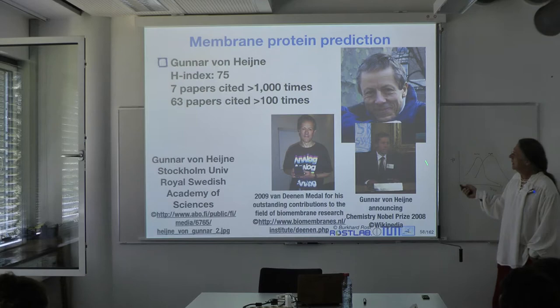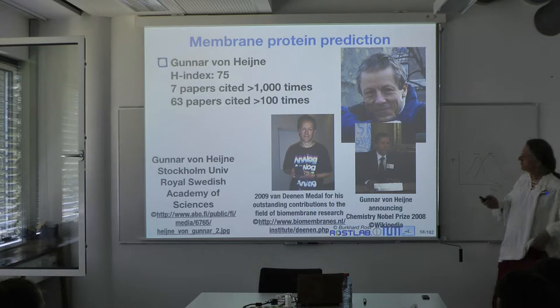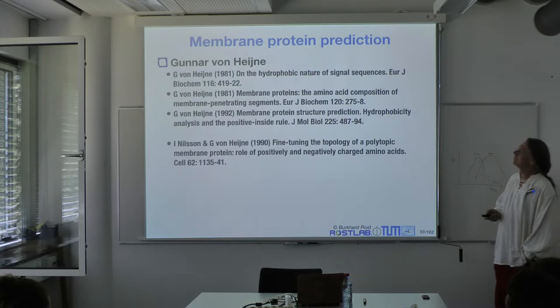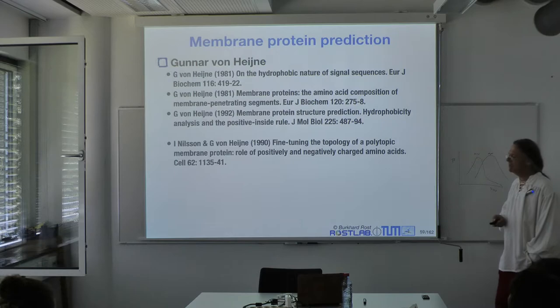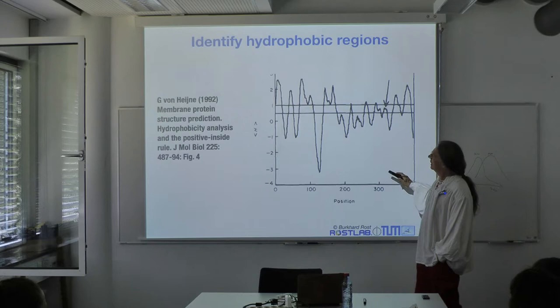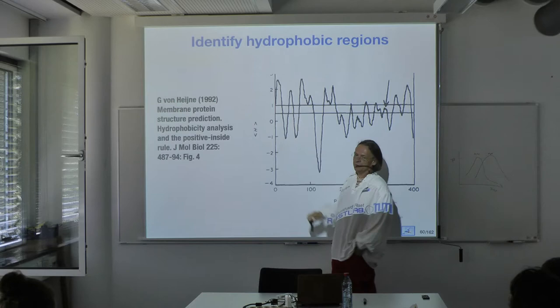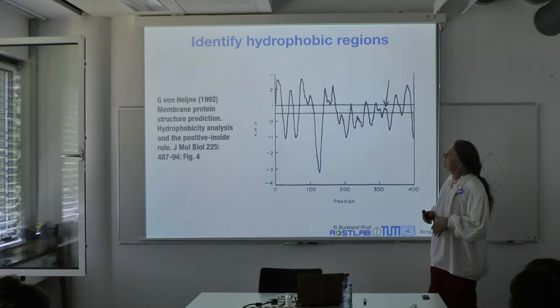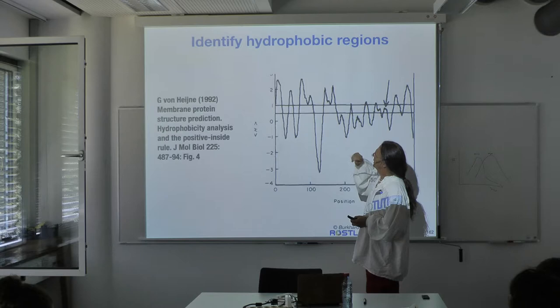Back to Gunnar von Heijne — here he is announcing the Nobel Prize in Chemistry in 2008, and he is also on the Nobel Prize Committee for Chemistry. A couple of important papers with which he changed the membrane field. In this one, we show position in a protein and an average hydrophobicity index, with two thresholds.